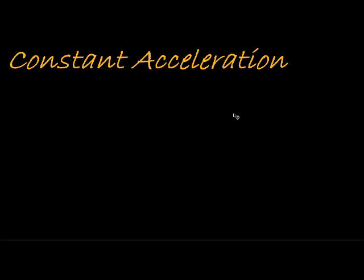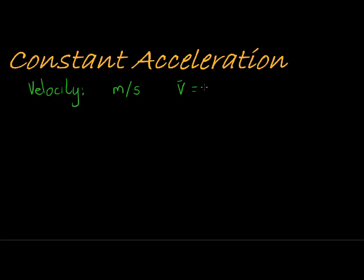Welcome to this lesson where we are going to talk about constant acceleration. Before we get to acceleration itself, let's quickly have a better understanding of velocity. Do you recall what unit velocity is measured in? It's measured in meters per second. The formula for velocity is equal to the change in displacement divided by a change in time. Displacement is measured in meters and time is measured in seconds — that's why we get meters per second.